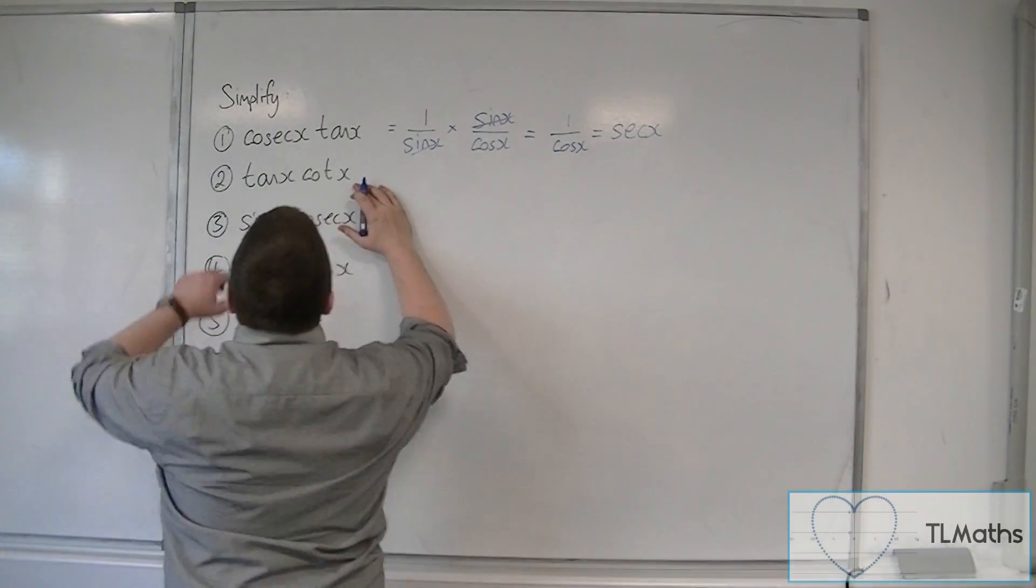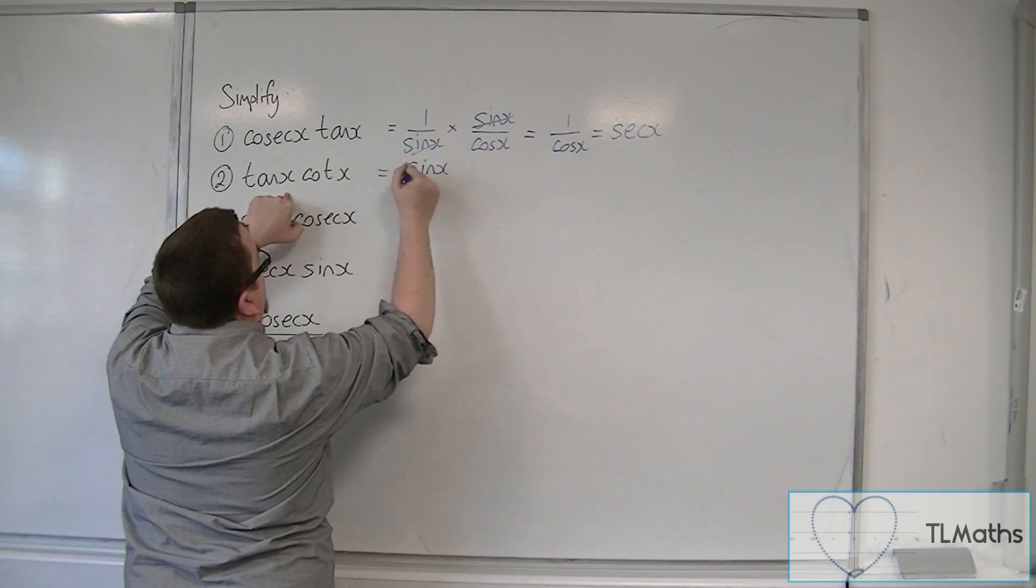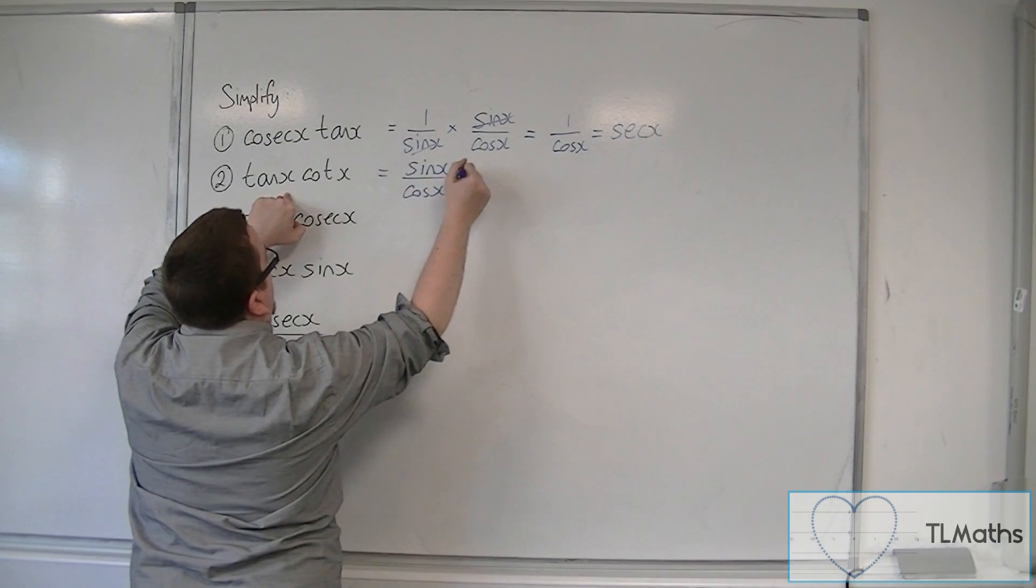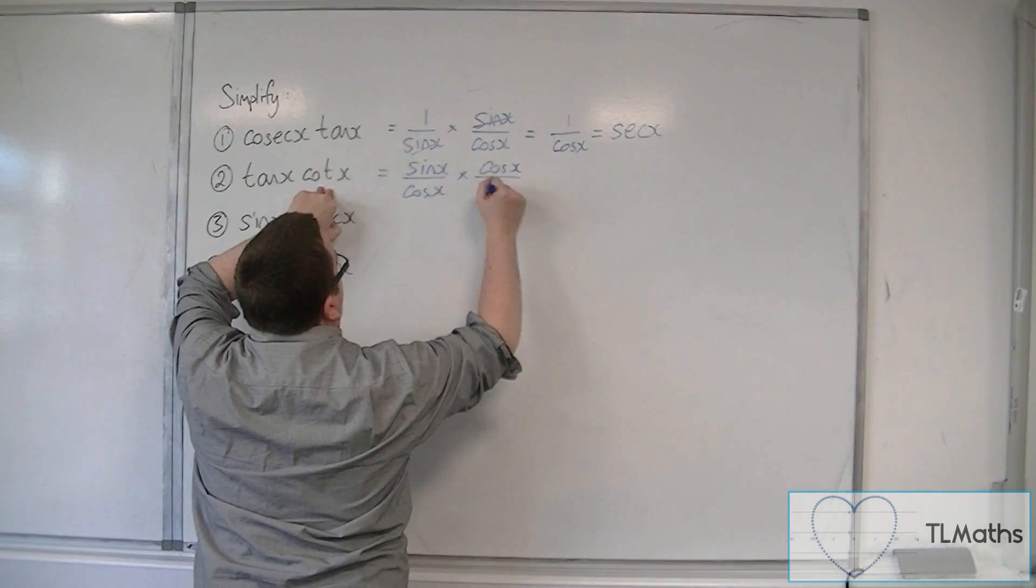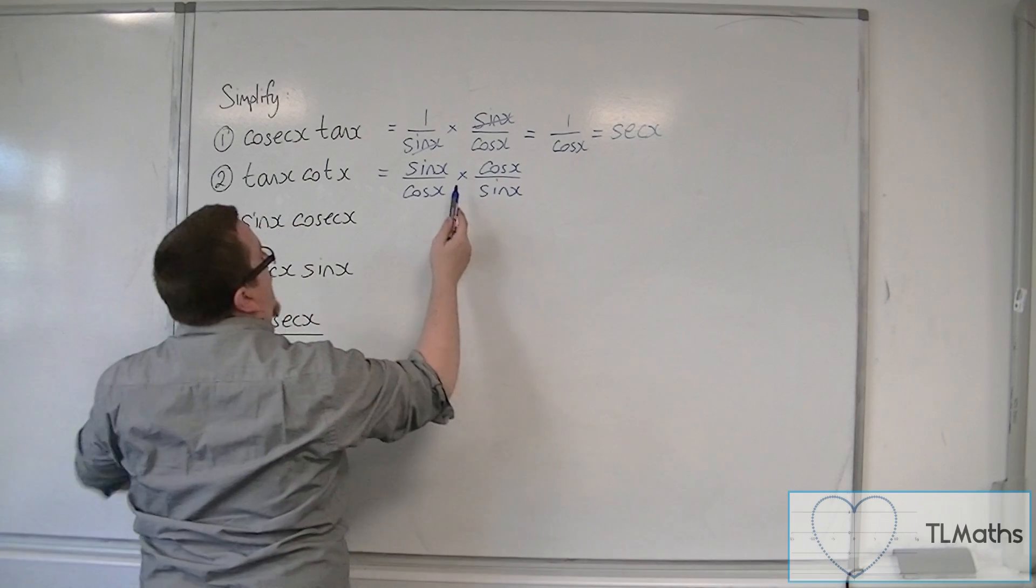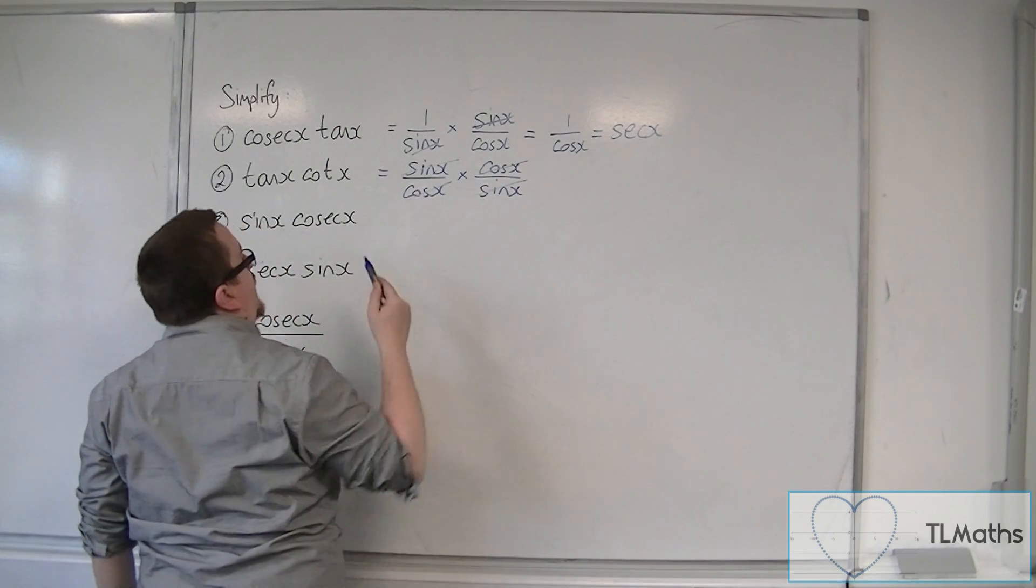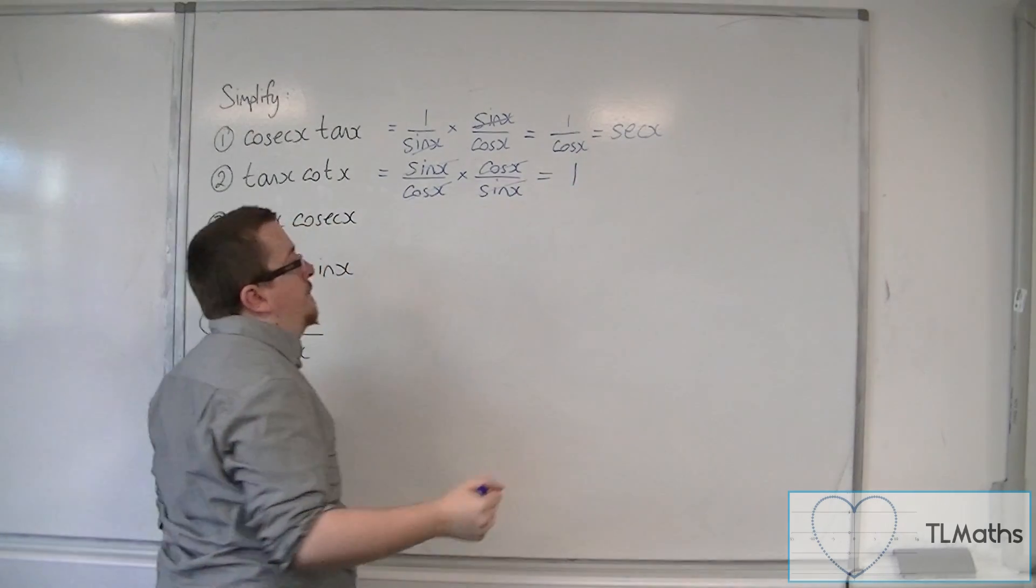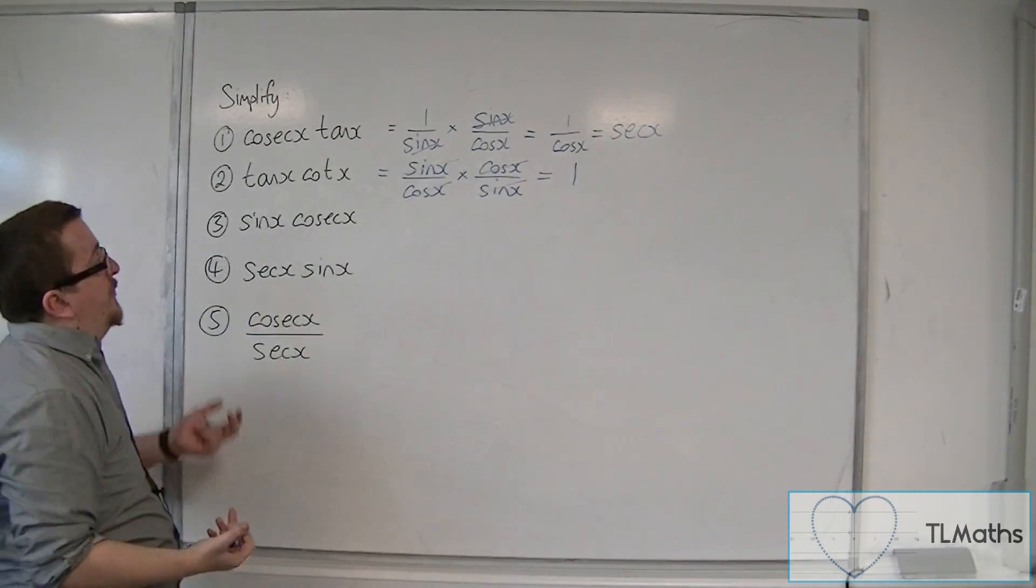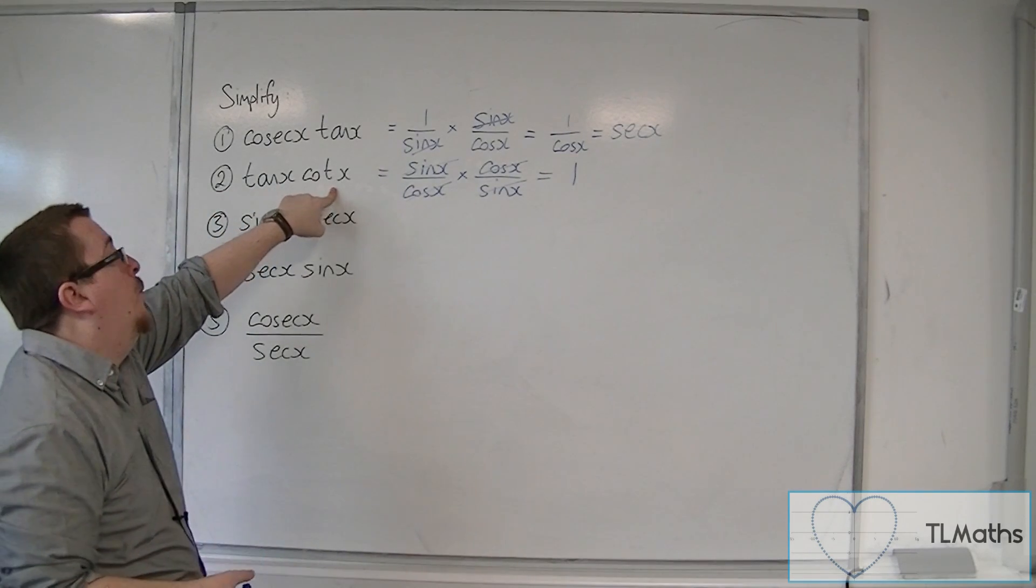Let's look at tan x cot x. Well, tan x is sine over cosine, and cot is cosine over sine. Now what's going to happen is that we have a sine that's going to cancel with that sine, and the cosine is going to cancel with that cosine. And so this is just going to be 1 over 1, or just 1. Now you could also see that as tan times 1 over tan, which will be 1 as well.